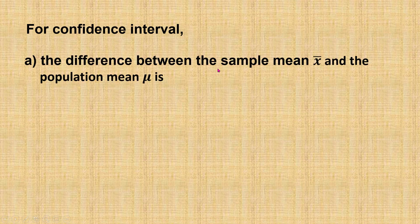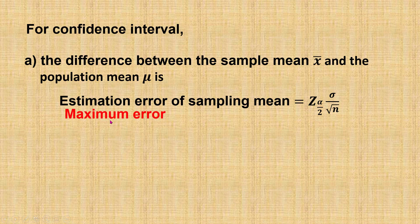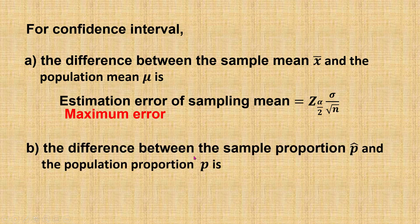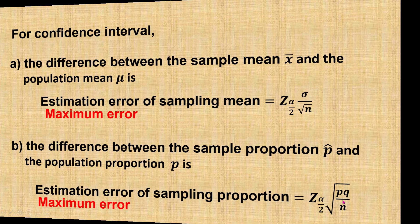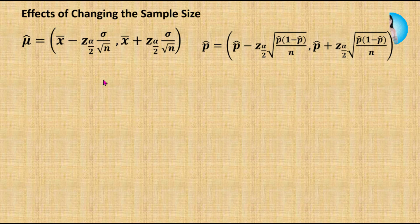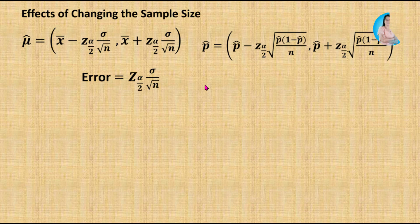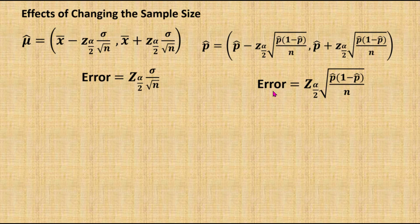For confidence interval, the difference between the sample mean and the population mean is the estimation error, or sometimes it is also called the maximum error of sampling mean, which is equal to z alpha over 2 times the standard deviation of the sample mean. The estimation error for the population mean is equal to z alpha over 2 times the standard deviation of the sample mean, and the estimation error for the population proportion is equal to z times the standard deviation of the sample proportion.